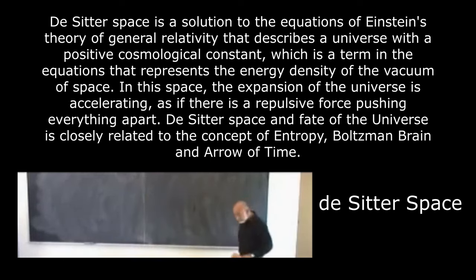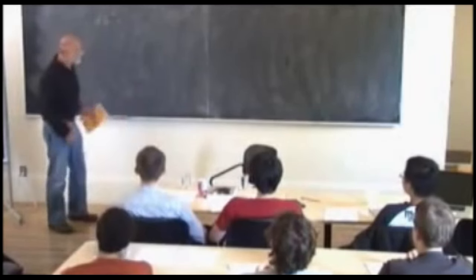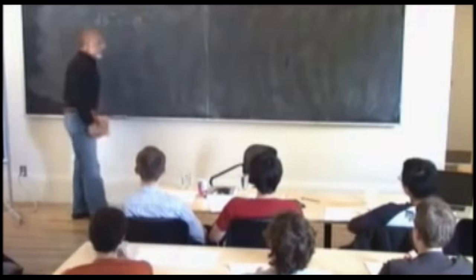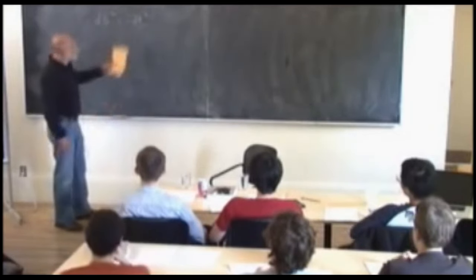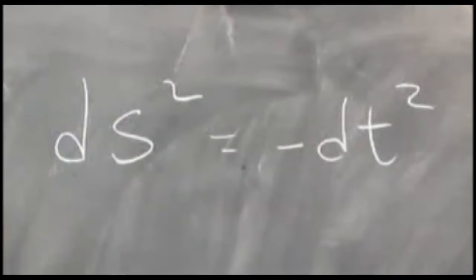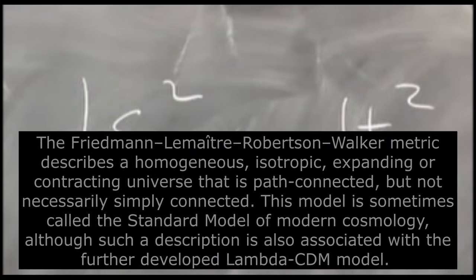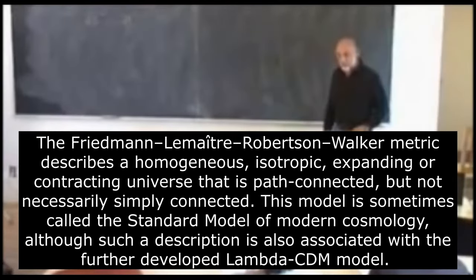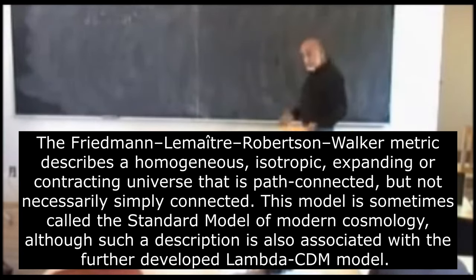The cosmological constant just means vacuum energy. The metric of spacetime, ds squared, because of the properties of special relativity, begins with a minus dt squared, and then in flat space we would write plus dx squared, plus dy squared, plus dz squared.